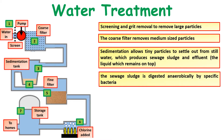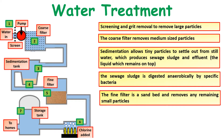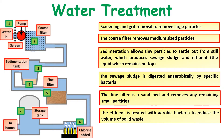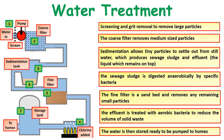The sewage sludge is then digested anaerobically by specific bacteria. A fine sand filter removes any fine or small particles. The effluent from that is treated with aerobic bacteria to reduce the volume of solid waste. Finally, the water is treated with chlorine and then pumped to people's homes.